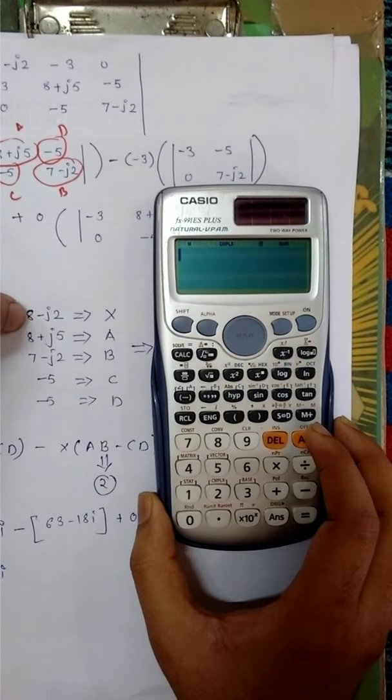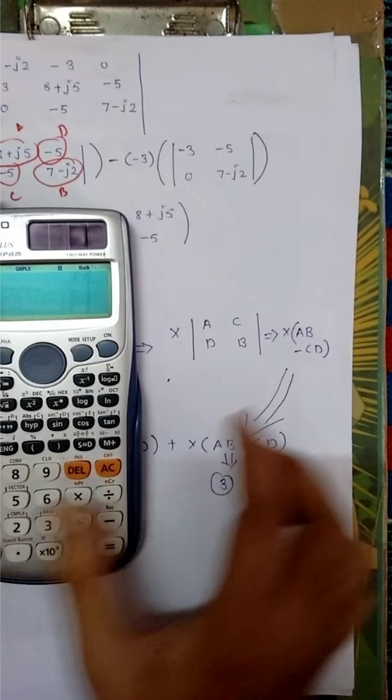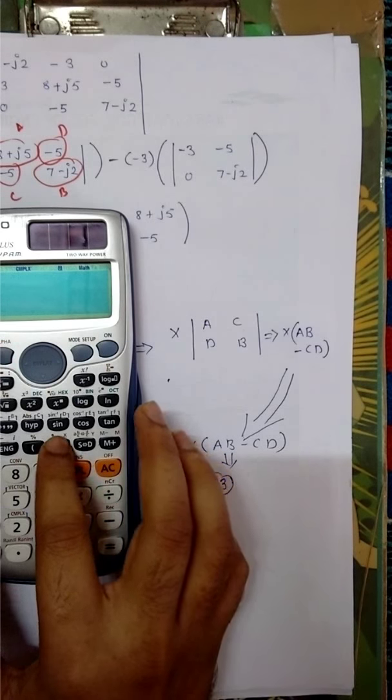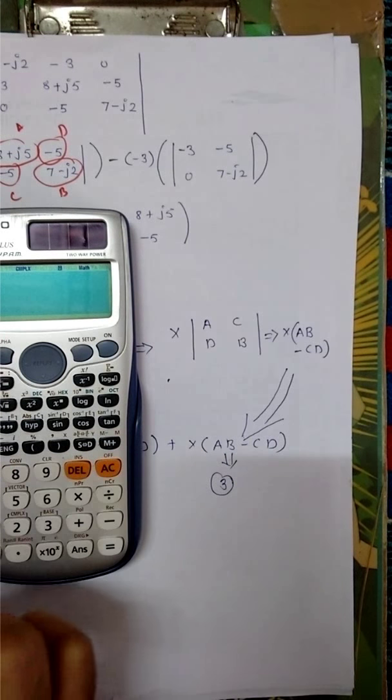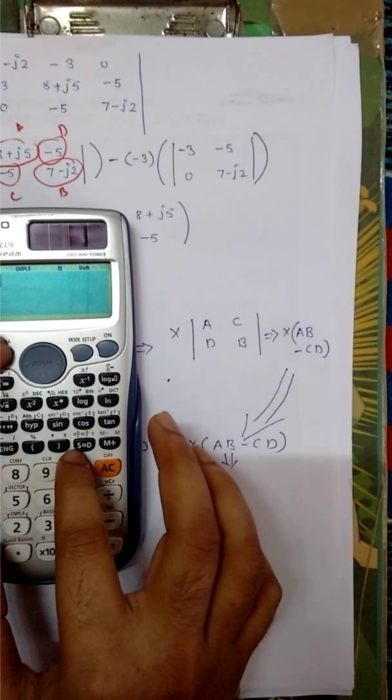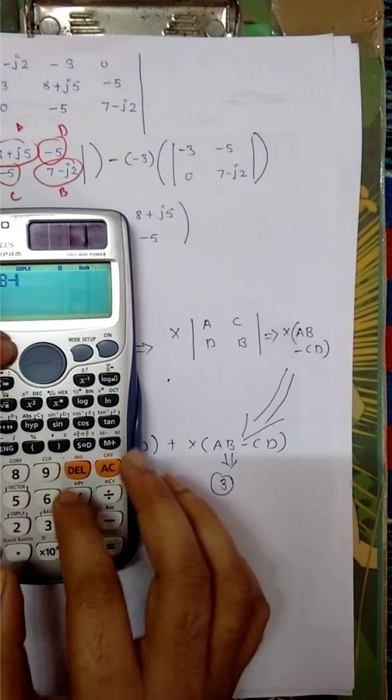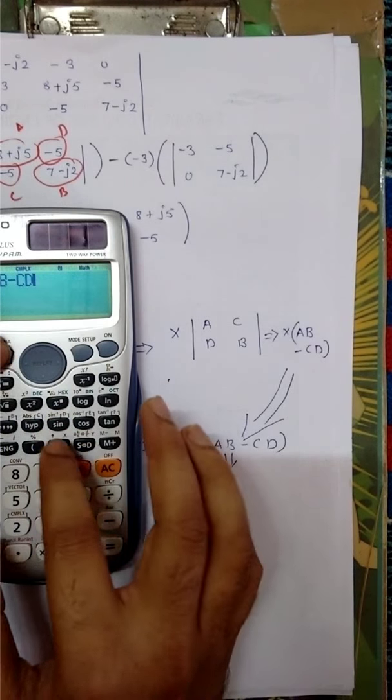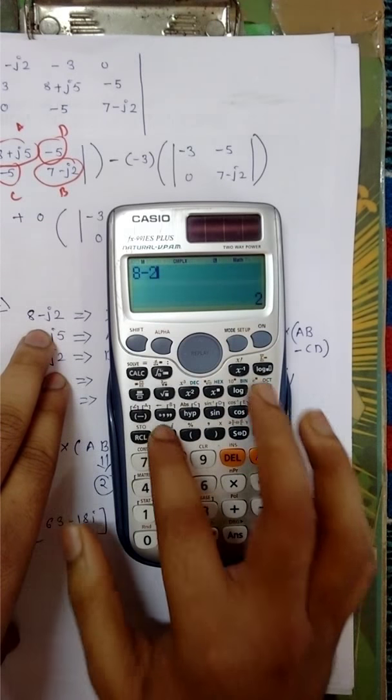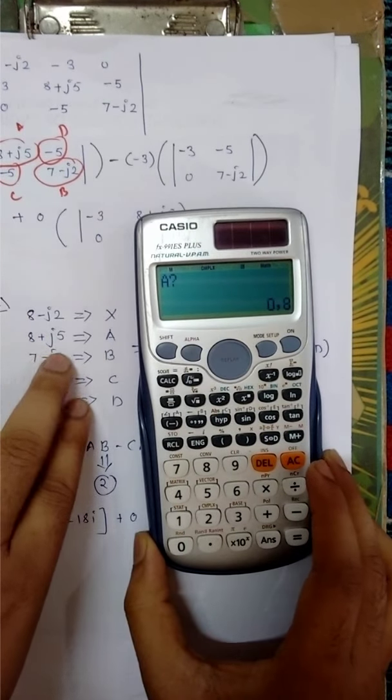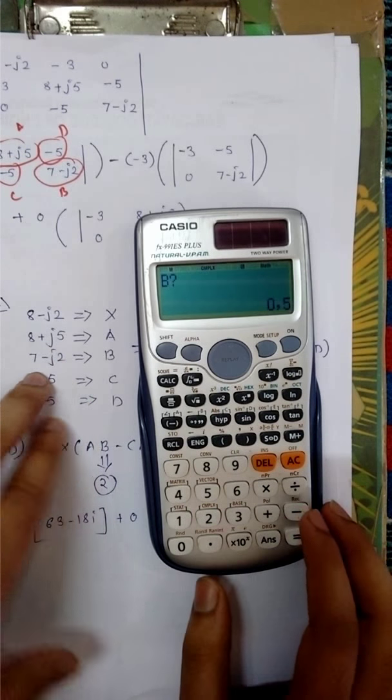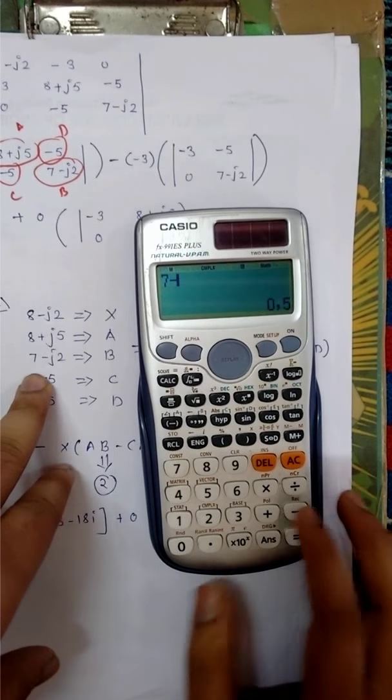Now I have selected x as 8 minus j2. So first I have to write this equation. I am writing this equation: x times bracket a times b minus c times d. Solve where x is 8 minus 2i, a is 8 plus 5i, b is 7 minus 2i.